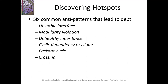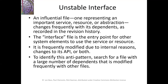Common anti-patterns that lead to debt include: unstable interface, modularity violation, unhealthy inheritance, cyclic dependency, package cycle, and crossing. For the unstable interface anti-pattern, an influential file — one representing an important service, resource, or abstraction — changes frequently along with its dependents as recorded in the co-revision history. The interface file is the entry point for other system elements to use a service and is frequently modified due to internal reasons or API changes. To identify this anti-pattern, search for a file with a large number of dependents that is modified frequently alongside other files.